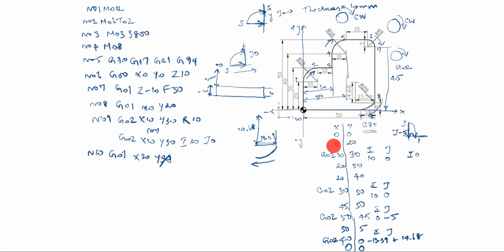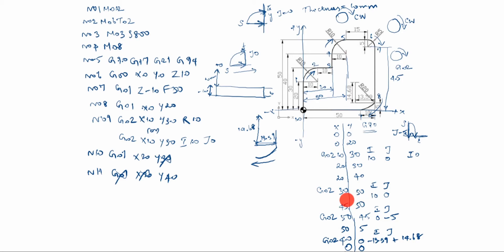N11: linear line again. G01, Y40 — X20 was already written before, so no need to write it again. Also G01 is the same, so no need to repeat it. Y40 is enough. Up to here finished, then we go this way — G02. G02, X30, Y50, I10, J0, or R10. Up to here finished.